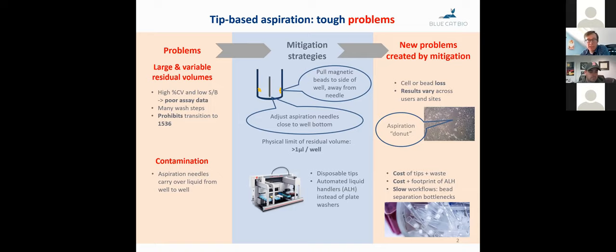So what are the mitigation strategies that people use to get around those problems. So in the context of magnetic bead assays, what people typically do is they pull the magnets to the side of the well away from the needle as a way to minimize the residual volume. And then also you adjust the aspiration needle as close to the bottom of the well to minimize the residual. But that creates its own set of problems, mostly cell or bead loss. Having the beads off to the side is a little bit of a precarious situation. It's very easy to lose beads from that position. And what it also means is that it creates a lot of variability across users and across sites because everybody adjusts the aspiration needle slightly different.